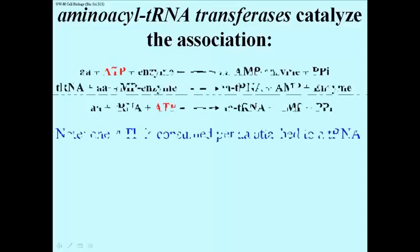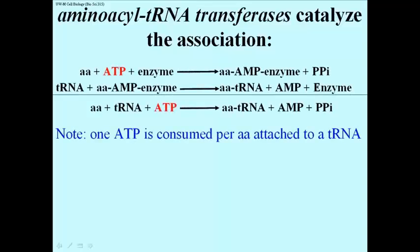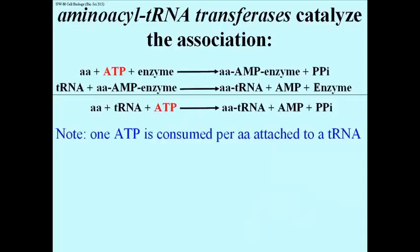Before showing how this enabled Nirenberg to break the genetic code in record time, let's go through the aminoacyl tRNA transferase catalytic reaction that associates tRNAs with their amino acids. It happens in two steps. The amino acid plus ATP — which will provide energy — plus the appropriate aminoacyl tRNA transferase forms an aminoacyl-AMP enzyme complex, liberating a pyrophosphate. The free energy is captured as this aminoacyl-AMP enzyme complex.